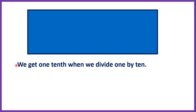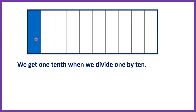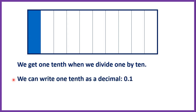We get one tenth when we divide one by ten. Here we have one big rectangle and if we divide it into ten pieces and keep only one of those pieces we have one tenth. We can write one tenth as a decimal — that's 0.1.